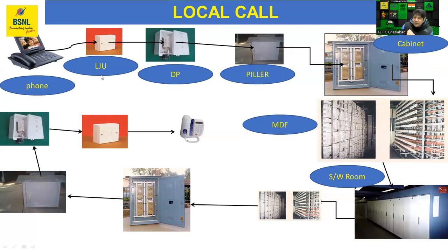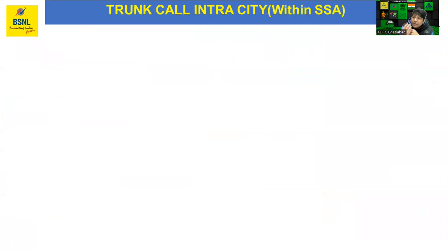When you and the person you're calling are in the same exchange, you are connected by wire in the same exchange. Now if you move out — to a city location more than 5 kilometers away but still in the same city, just under a different exchange — the procedure changes.